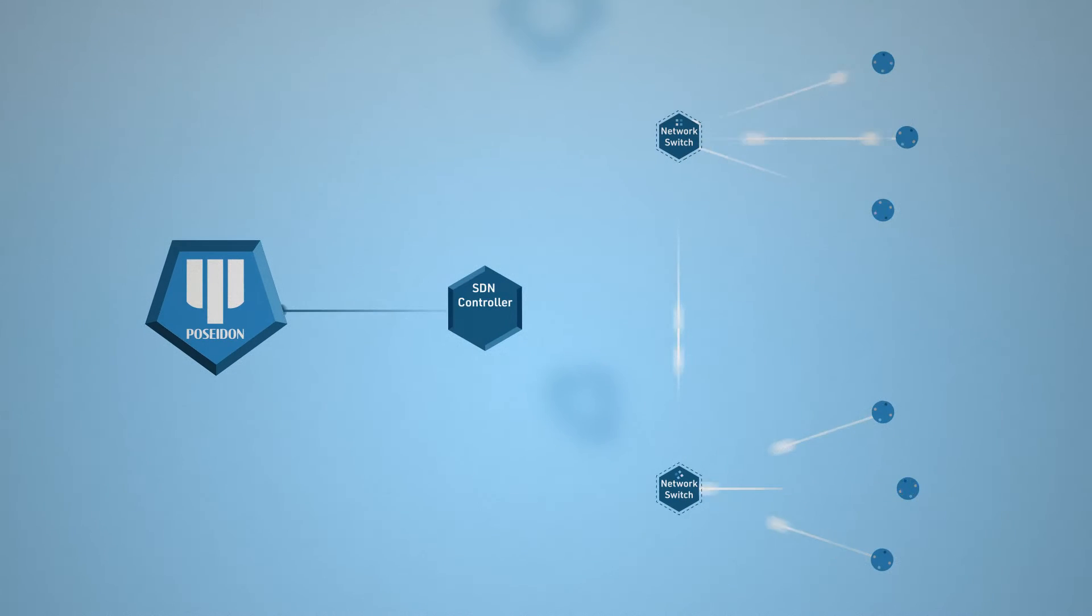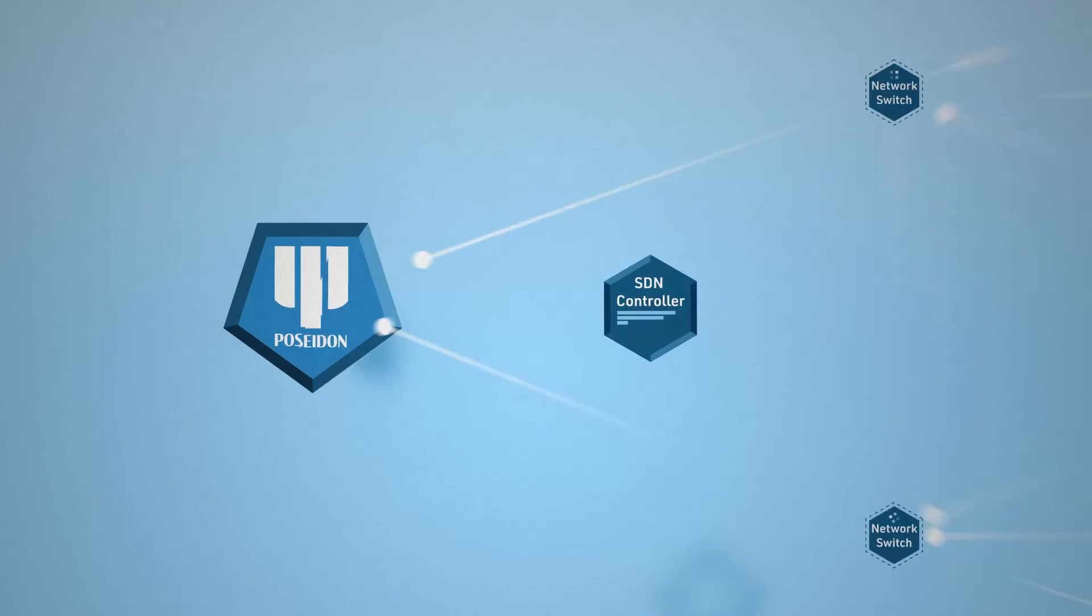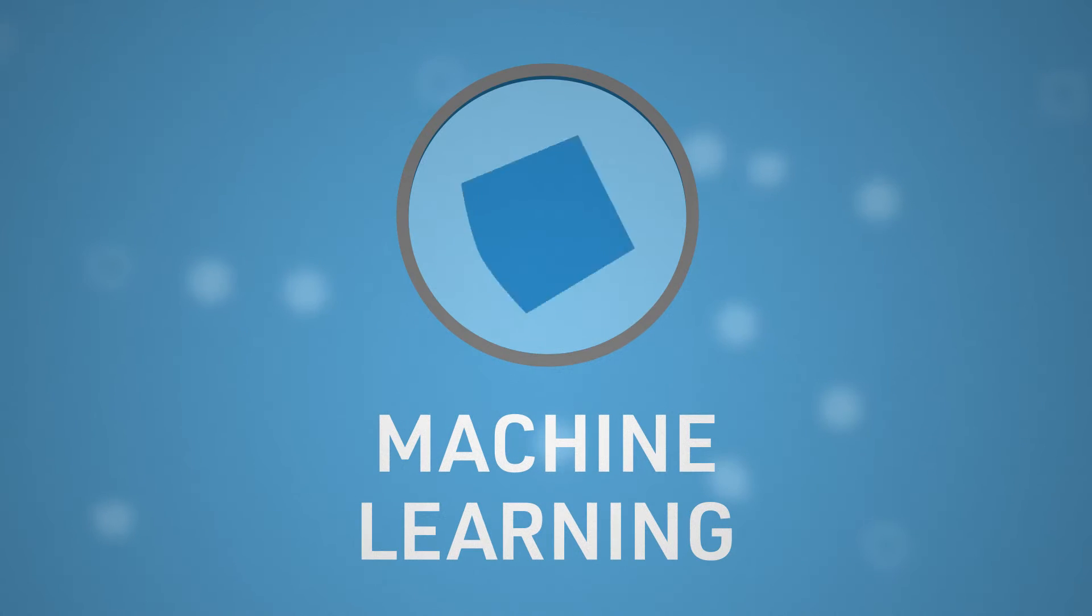Poseidon automatically discovers and collects traffic data from devices on the network and sends that data to machine learning models. Those models then make predictions about what those devices are.